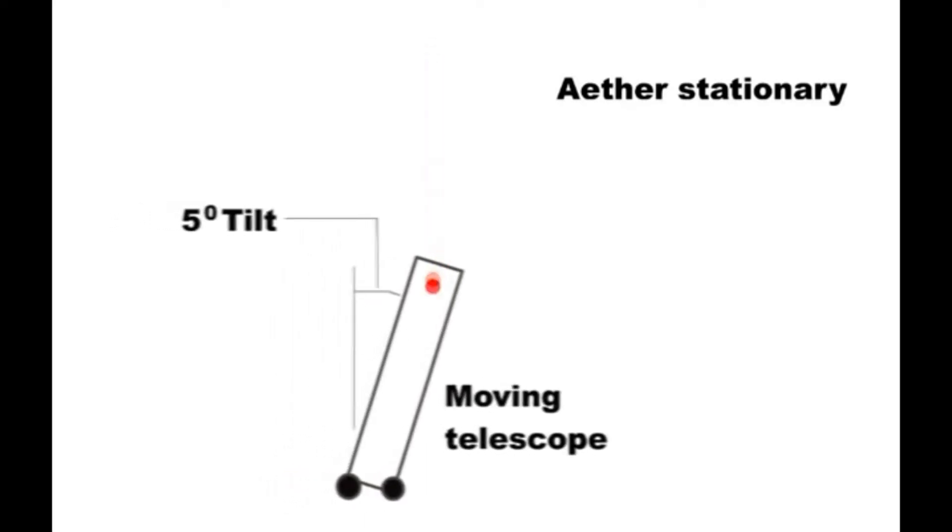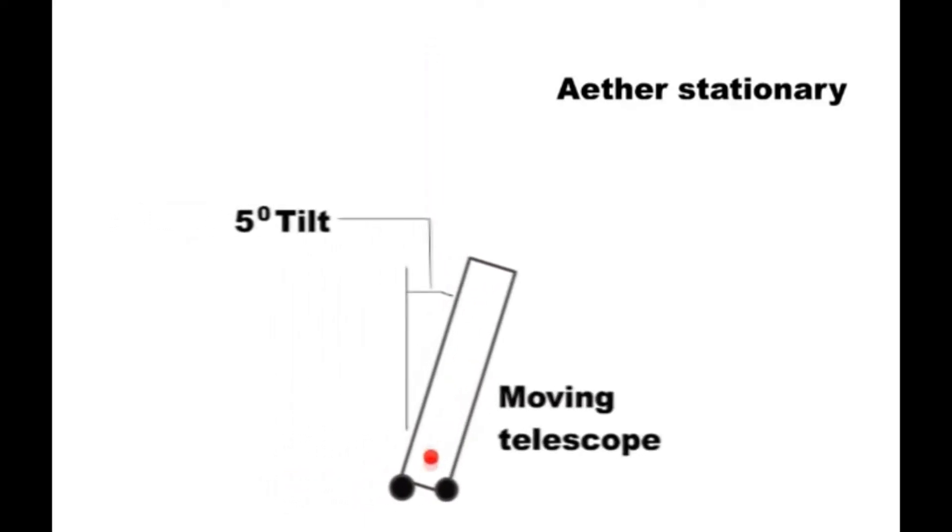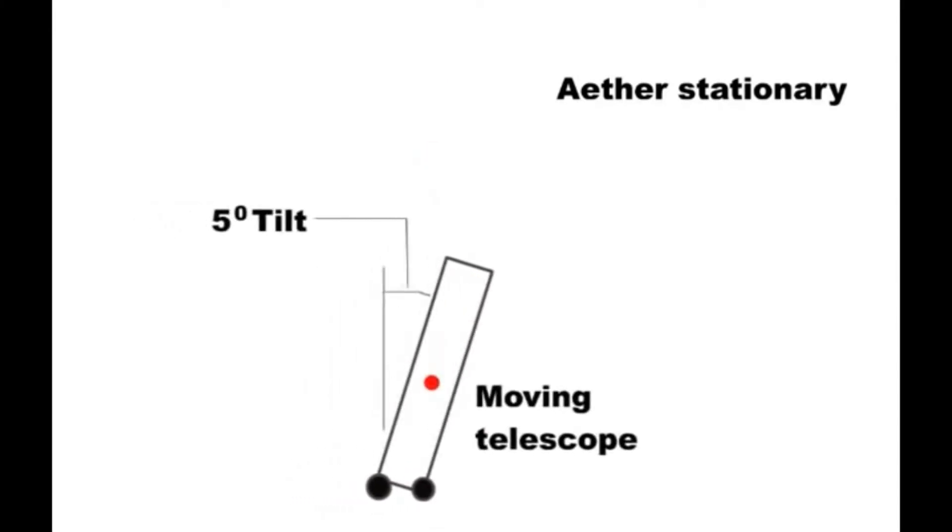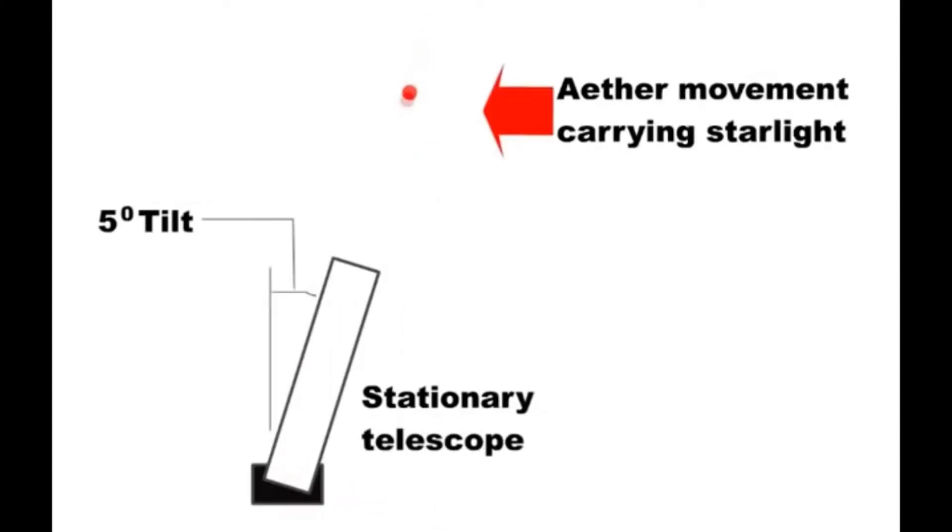Let us assume that the telescope was moving at 5 mile an hour and had to be tipped 5 degrees. This 5 degree tipping, however, could equally be caused by the ether moving at 5 mile an hour carrying the stars around the Earth. As we see here, the light would be coming in at the same angle and the telescope would still have to be tipped 5 degrees.